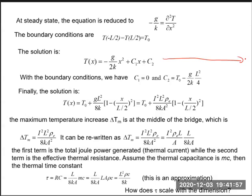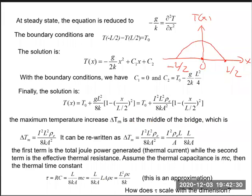T(X) is a parabolic function of X. The range is from negative L/2 to L/2. T(X) reaches its maximum when X equals zero — namely at the middle of the bridge. The maximum temperature increase delta T_m occurs at the center. When X equals plus or minus L/2, T equals T0, the heat sink temperature, which is exactly what we expected.